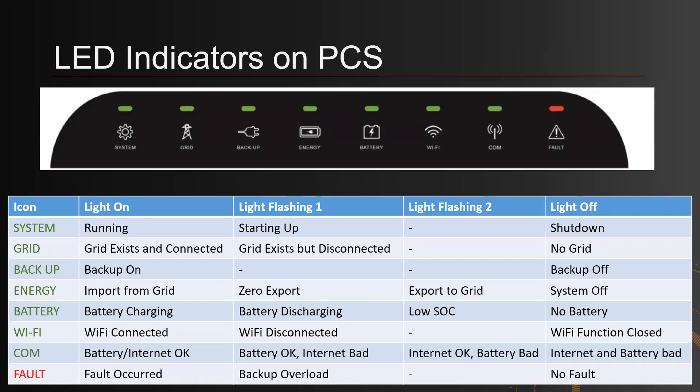For the Grid icon: solid green means the grid exists and is connected; flashing means the grid exists but has not connected yet; off means no grid is detected. For the Backup icon: solid means it is currently backing up loads on the backup service panel; off means backup is not being provided. For the Energy icon: on means importing from the grid; flashing means undergoing zero export; flashing fast means the grid is exporting; off means the system is off.